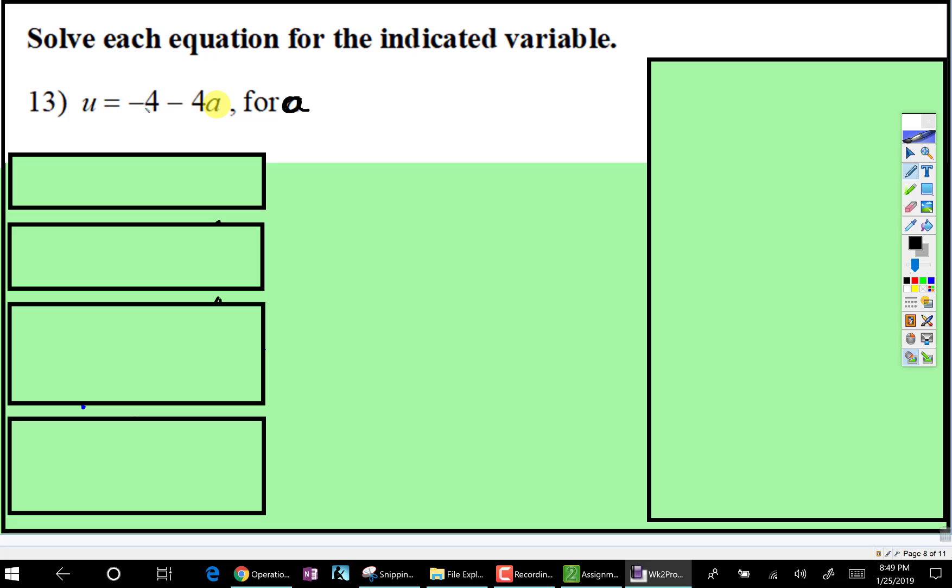So you take the stuff not attached to a, and you get rid of that first. So how do you cancel a negative 4? What's the inverse of negative 4? That would be positive 4. You would add positive 4 to both sides.